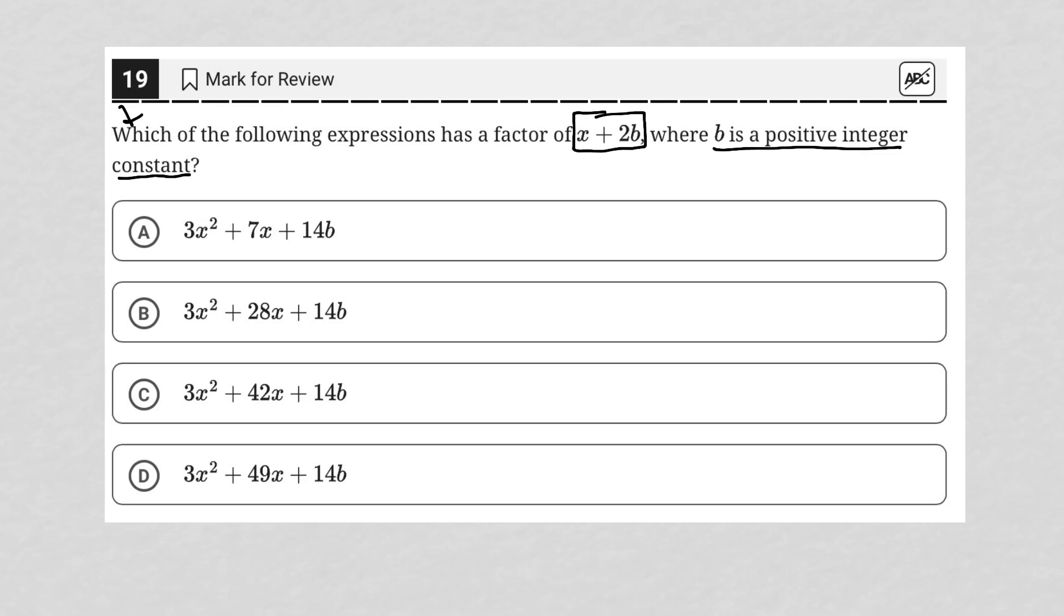Okay, so what do I know? I know that x plus 2b is a factor of one of these expressions. All of my expressions in the answer choices are trinomials. I know that I can factor a trinomial into two binomials, and each of those binomials would be considered a factor, which means the question is giving me one of those factors. So I'm going to place x plus 2b inside my second parentheses.